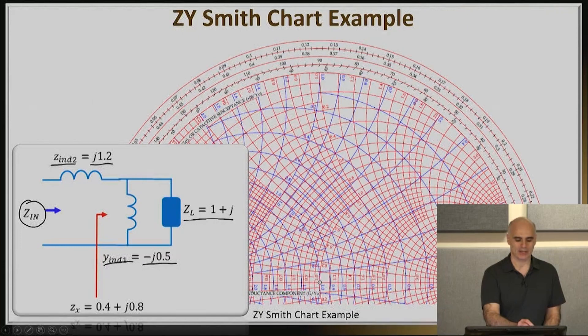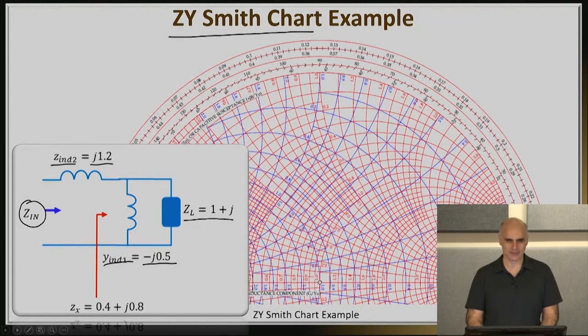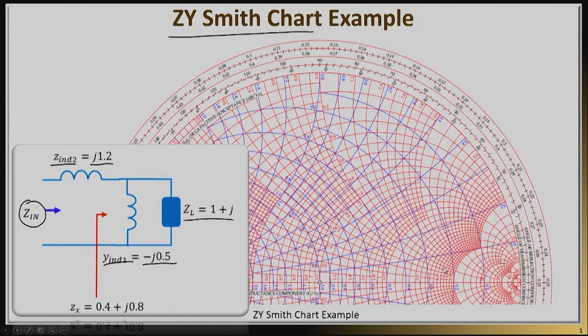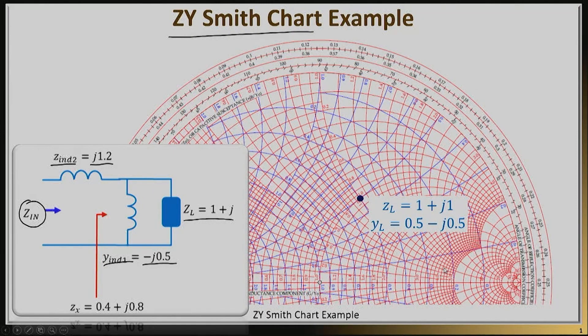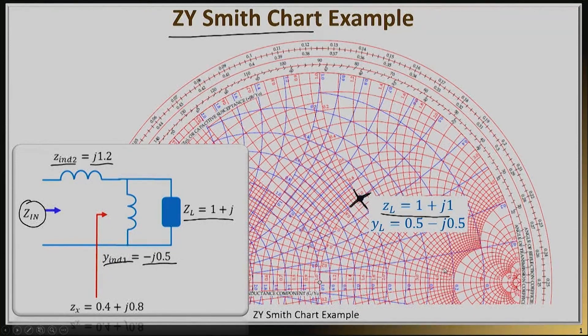I'm going to use the ZY Smith chart. Let's first locate the load on the Smith chart. The load is given with its impedance, so I'm using the impedance Smith chart, the red lines. The load has a real part of 1 and imaginary part of 1. Here's the circle with real part 1, and here's the circle with imaginary part 1. At the intersection, I get my load. Here is my ZL, 1 plus j1.